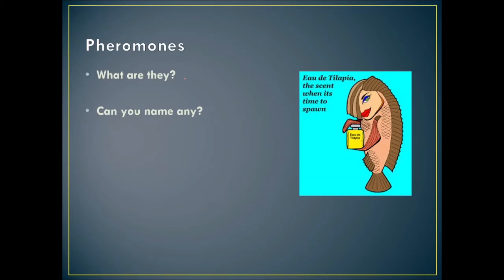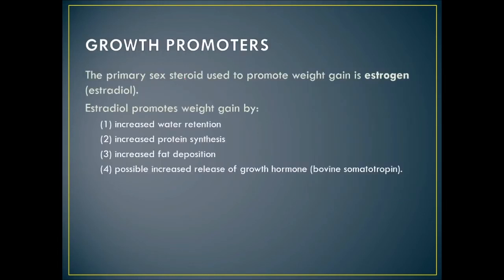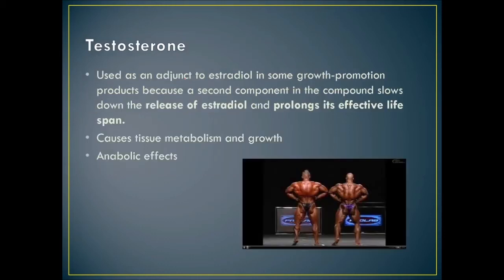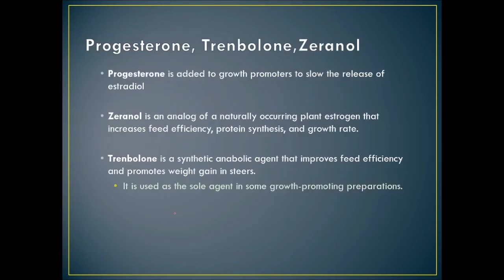Testosterone is used as an adjunct to estradiol in some growth promotion products because it slows the release of estradiol and prolongs its effective lifespan, creating an anabolic tissue metabolism effect. Progesterone, trenbolone, and zeranol are also used. Zeranol is an analog of a naturally occurring plant estrogen that increases feed efficiency, protein synthesis, and growth rate. Trenbolone is a synthetic anabolic agent that improves feed efficiency and promotes weight gain in steers.